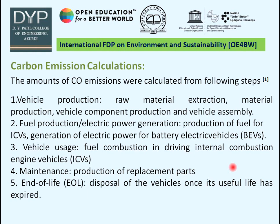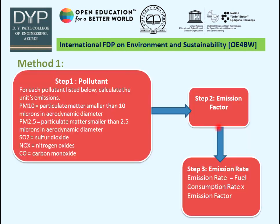Step 2 is Fuel Production, including Electric Power Generation and production of fuel for IC engine vehicles. Step 3 is Vehicle Usage, that is fuel combustion in driving an internal combustion engine. Step 4 is Maintenance — production of replacement parts. Step 5 is End of Life, that is disposal of vehicles once their useful life has expired. These are the steps to calculate carbon emission.